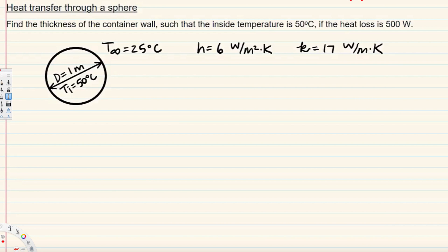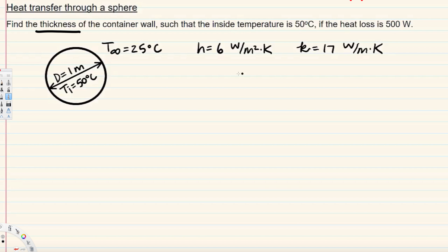Let's do this problem. The question is asking to find the thickness of the spherical wall such that the inside temperature is 50 degrees Celsius, given that the heat loss is 500 watts. We also have a surrounding temperature, heat transfer coefficient, and thermal conductivity provided.